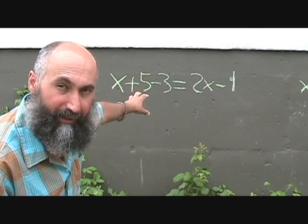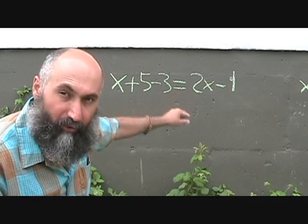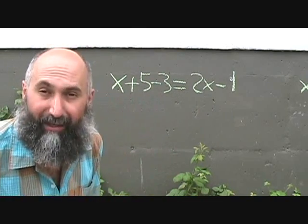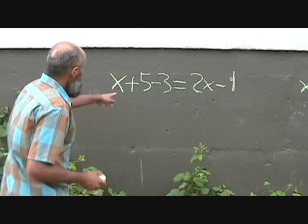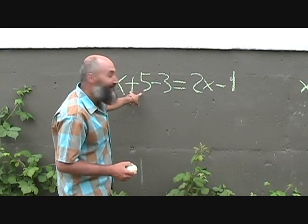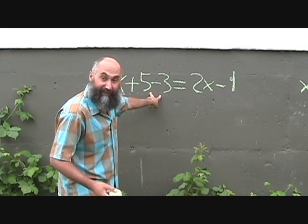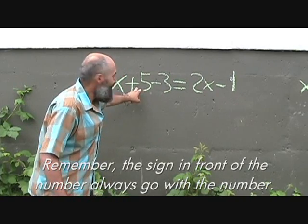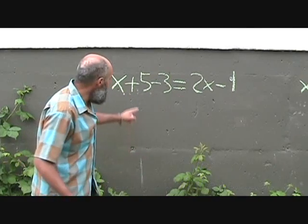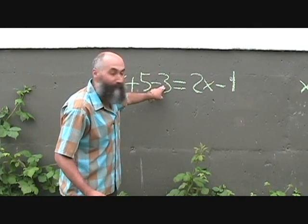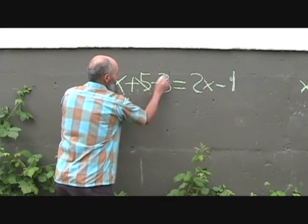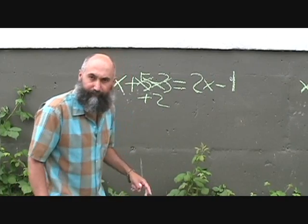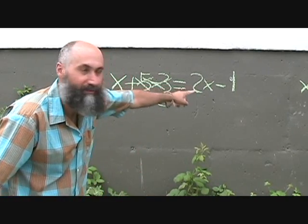So let's simplify. We have x plus 5 minus 3. We can't combine the x with the numbers since they're not the same term, but we can combine the numbers. The sign in front of the number always goes with the number, so that's positive 5 minus 3, which gives you 2. So you cross those out and it becomes plus 2. Now you've got x plus 2 is equal to 2x minus 1.